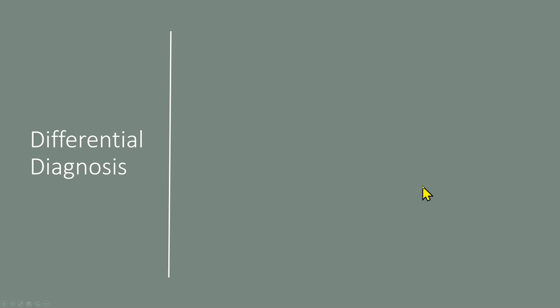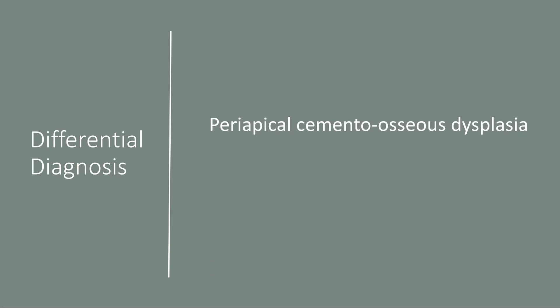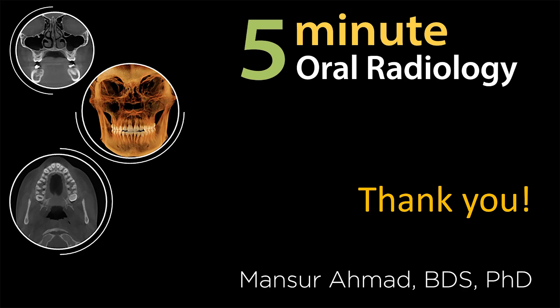The differential diagnosis of apical periodontitis includes periapical cemento-osseous dysplasia. The sclerotic type of apical periodontitis also includes a differential diagnosis of dense bone island. Thank you very much — I'll see you again in a different video.